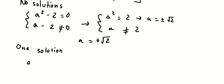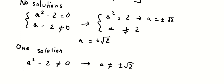For one solution, a squared minus two cannot equal zero. So a cannot equal positive or negative square root of two.